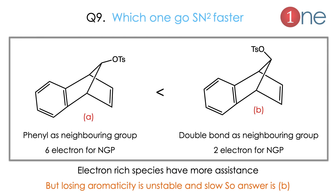Here is a tricky question — which goes faster between A and B? Phenyl ring is assisting in one and the double bond is assisting in the other. You should consider stability: taking electrons from benzene disturbs the ring current and aromaticity. The double bond as neighboring group is more stable and can undergo faster. The argument is in terms of stability — you should not disturb the aromaticity in neighboring group participation.